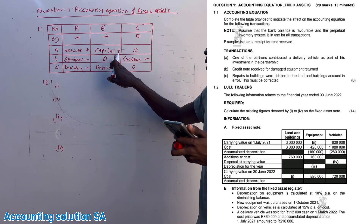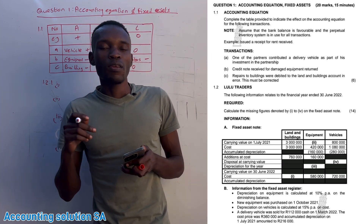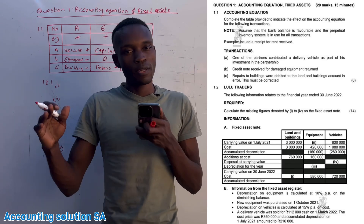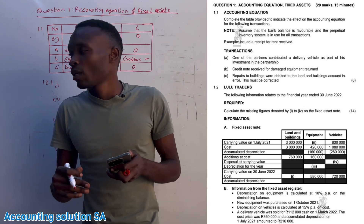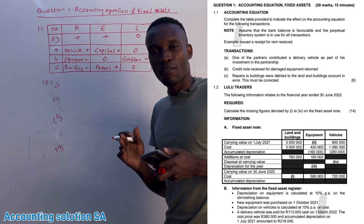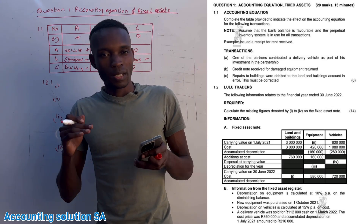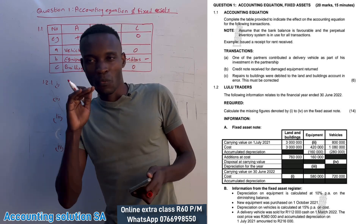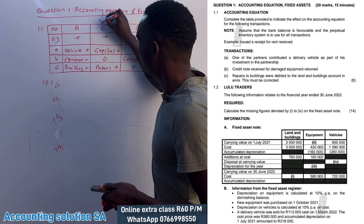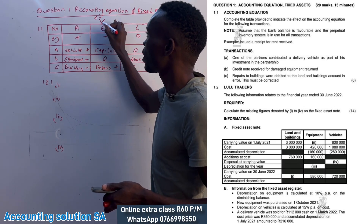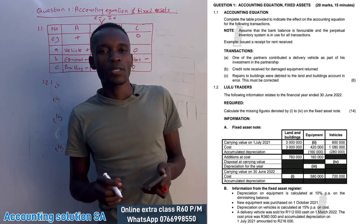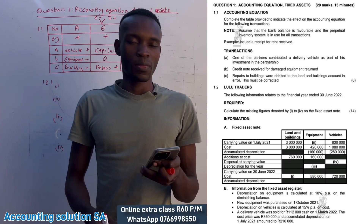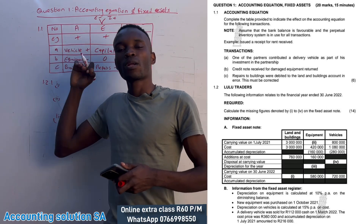Why do we record repairs as a plus here? Remember repairs is an expense, but we are correcting an error that was already recorded, so we do the opposite — the reverse entry. When you correct a transaction, if it was an income recorded in error the correction is negative; we know income is plus and expense is minus under equity, but for error corrections you do the opposite because you are rectifying something already recorded.